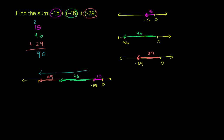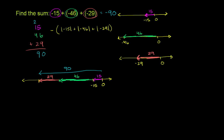The entire length when you add up the arrows is 90. But it is not 90 to the right — if these were all positives, we would get positive 90. This is 90 to the left, so when you add these numbers up, you get negative 90. These are all the same sign, so the result is the negative of the sum of the absolute values — 15 plus 46 plus 29 equals 90 — but to the left, which is why it is negative 90.